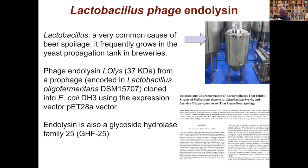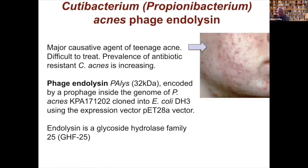Another endolysin we looked at came from an approach by the brewing industry, who were interested in controlling Lactobacillus — a major spoilage agent in yeast propagation tanks in breweries. We cloned an endolysin from Lactobacillus oligofermentans using the same vectors. It is a histidine-based enzyme and works well on zymograms. The collaboration with industry didn't get off the ground, but it's work we hope to advance at some stage.